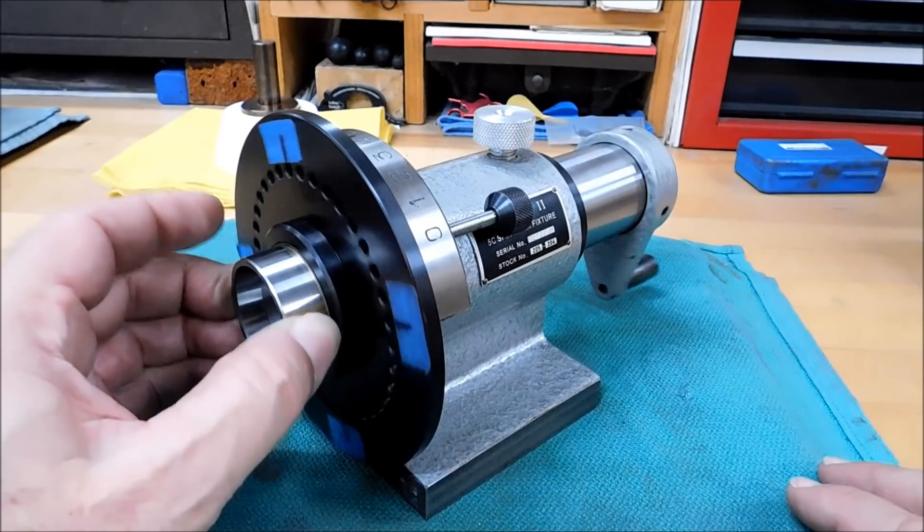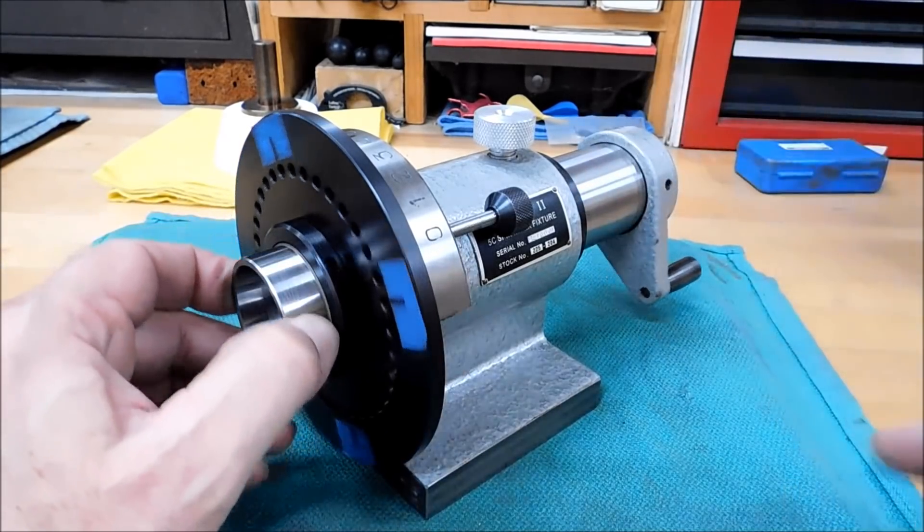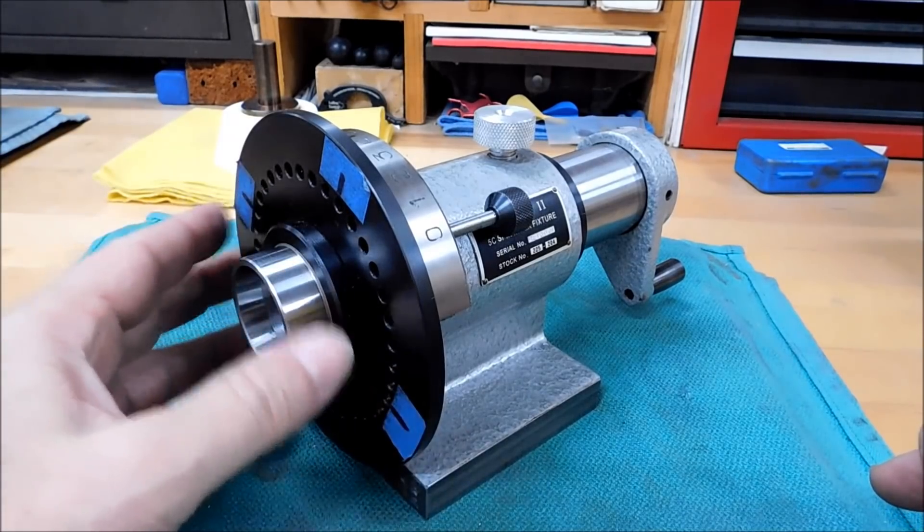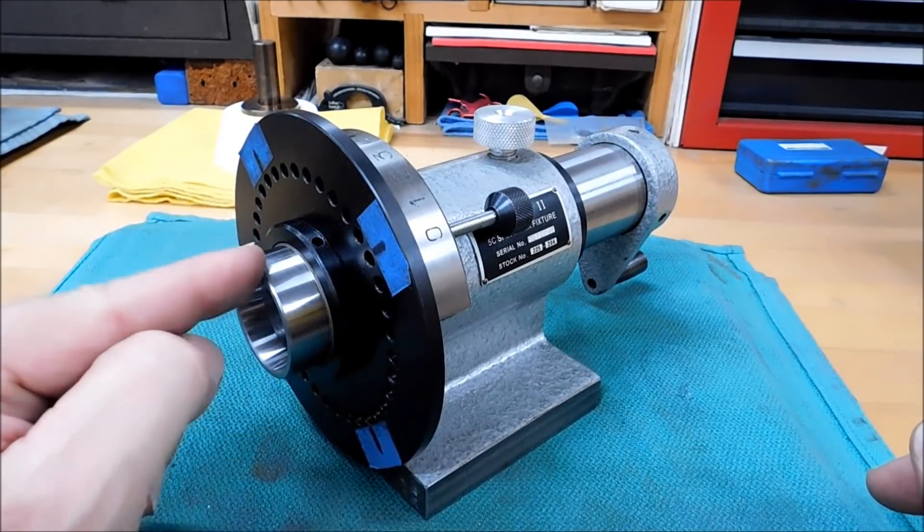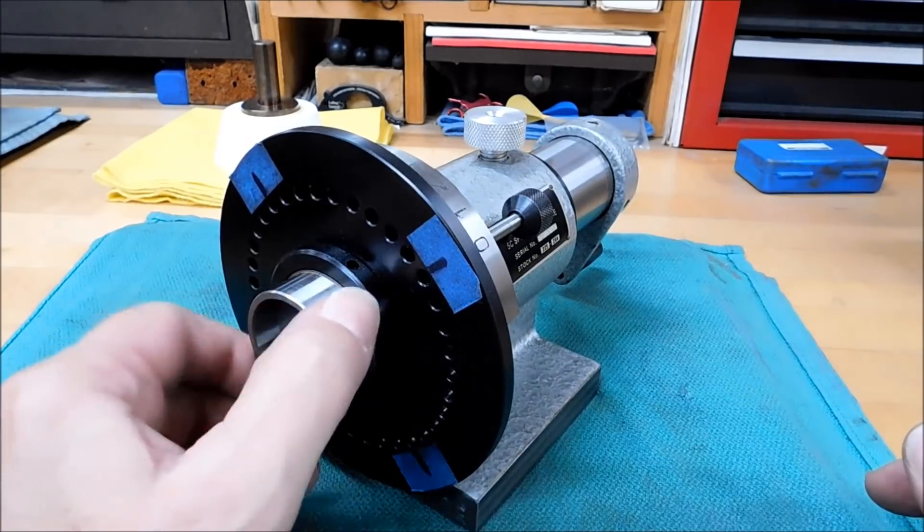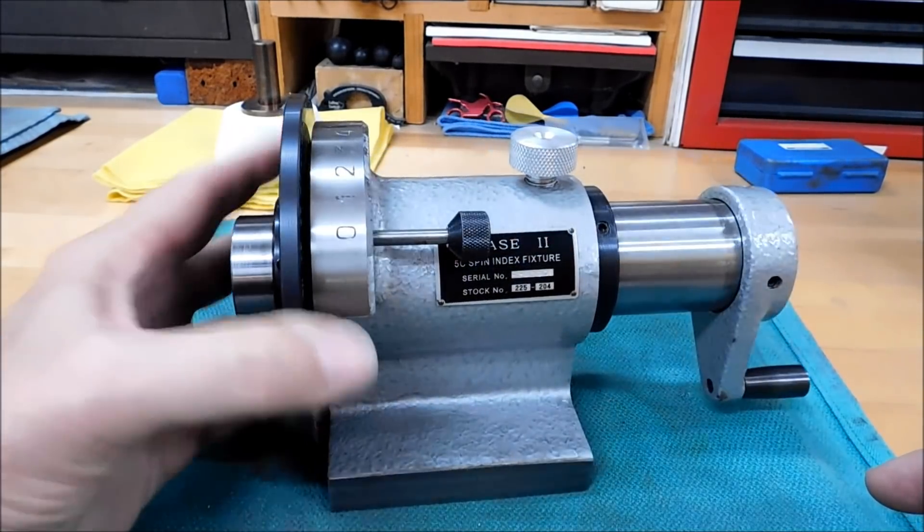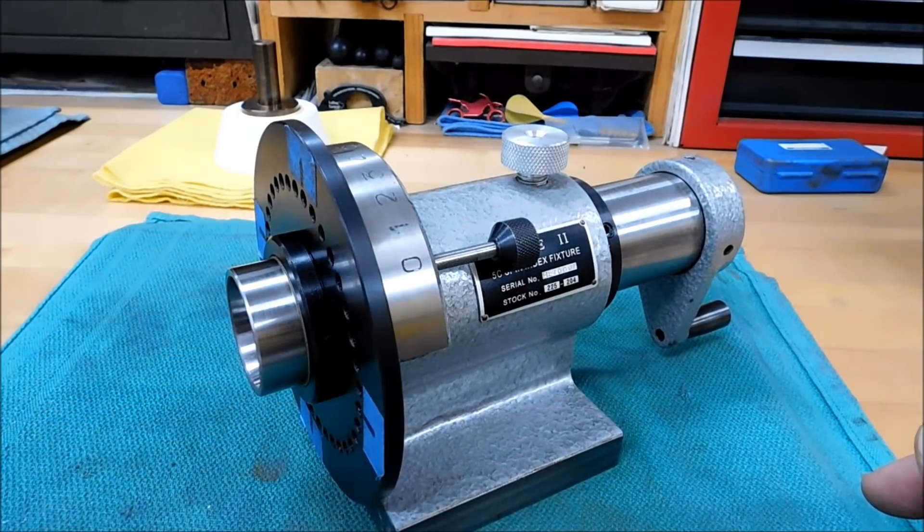You can also use it in a full spin to grind down an OD of a part that you're working with. Of course, you do not want to do that on a mill because the cutter will grab the part and it will jerk this thing out of your hand. Trust me, I've seen it done.